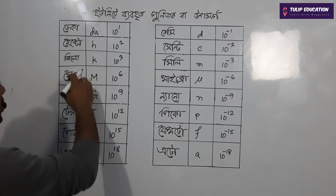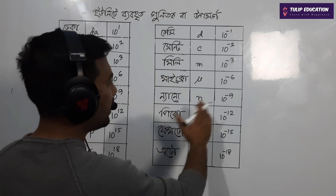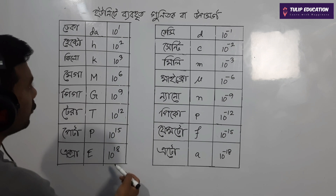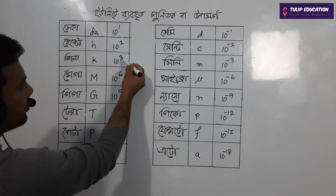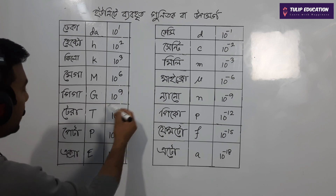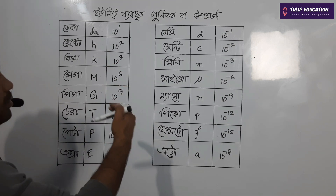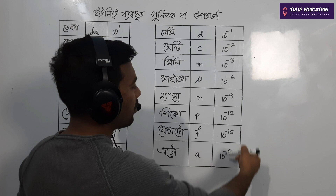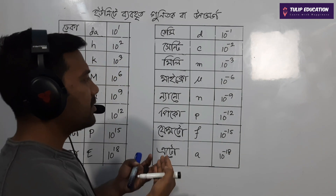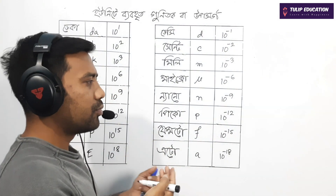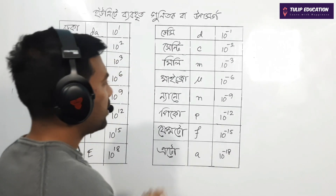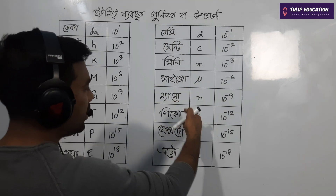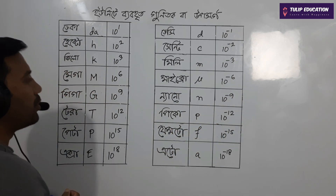So we have 8 positive values and 8 negative values. This is the value of 10 to the power of minus 9, and it is equal to 10. This is very common.